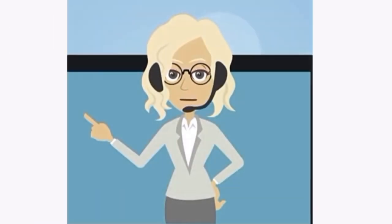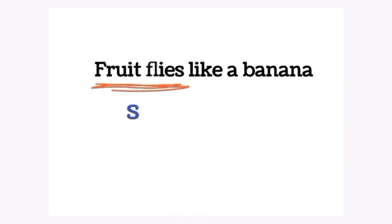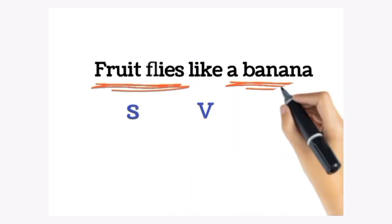Hope you will understand the meaning of it. Fruit flies is the subject, like is a verb, and a banana is an object.